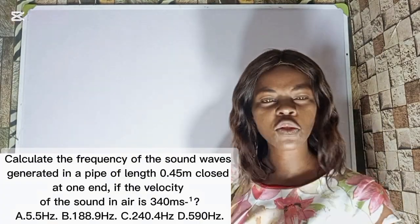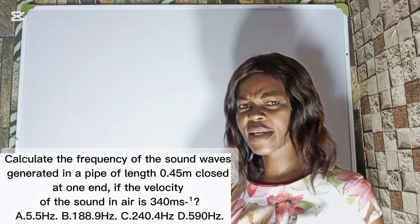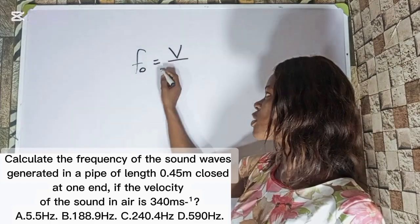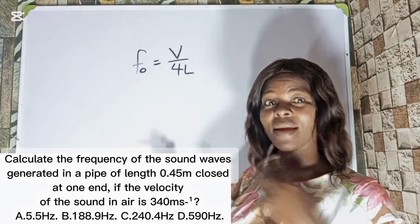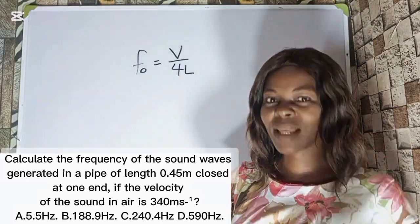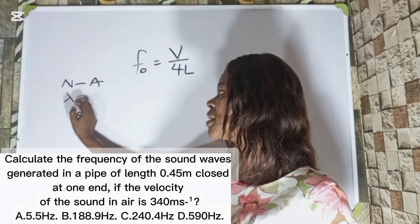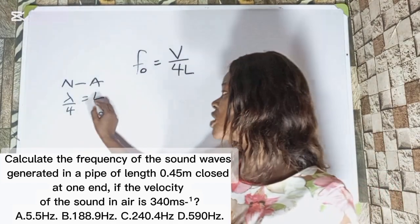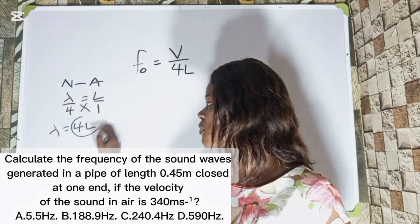To solve this question, one thing that will come to your mind is: closed pipe. What is the frequency of a closed pipe? The fundamental frequency of a closed pipe is given by F₀ = V over 4L, because it is a closed pipe. The distance between a node and an antinode is equal to lambda over 4, and that distance is L. So if you want to get the wavelength lambda, you get lambda = 4L. That is why we have 4L in the formula.